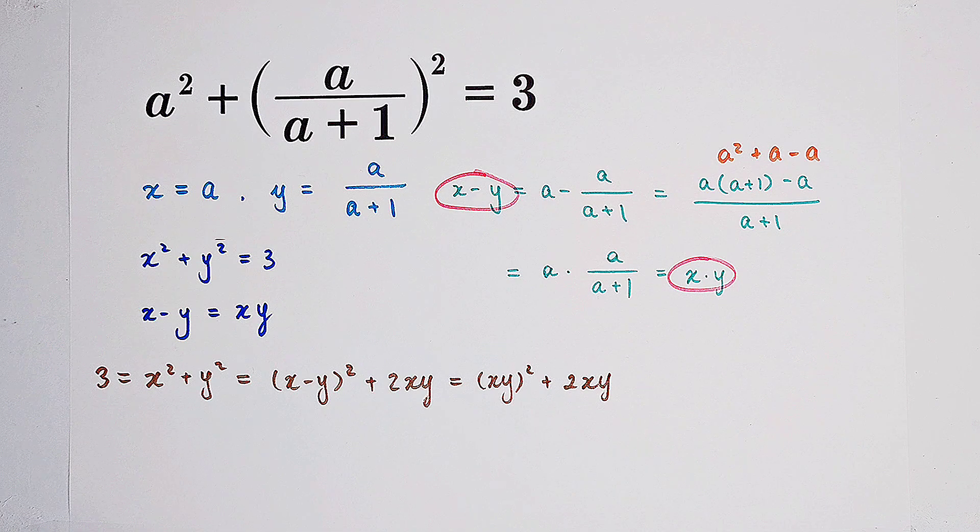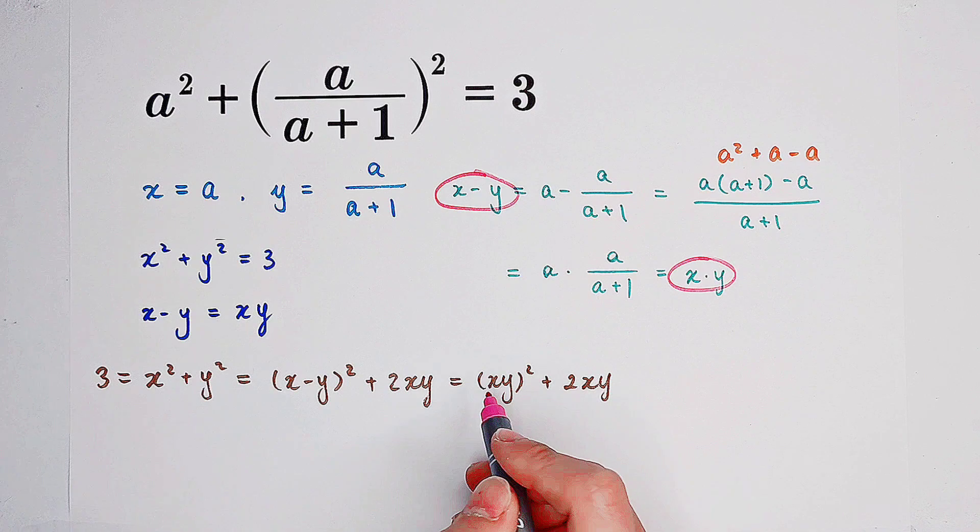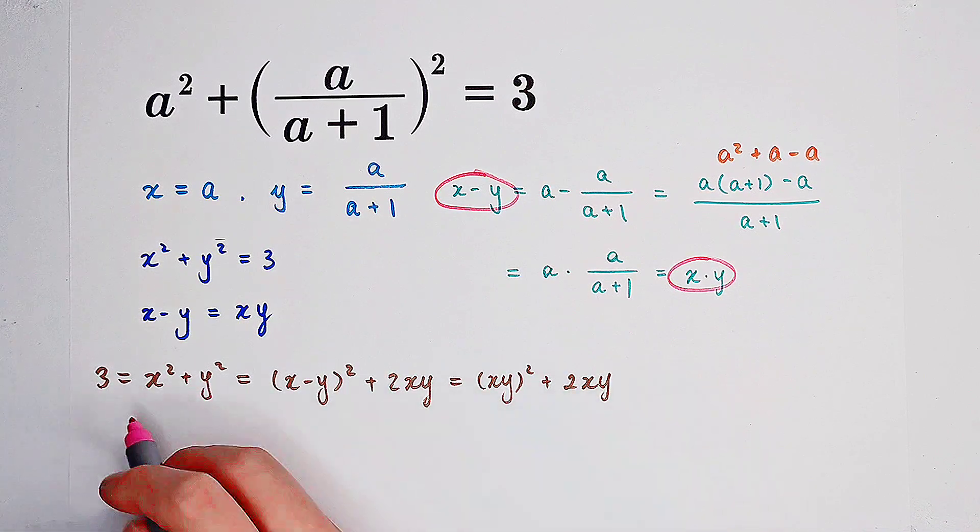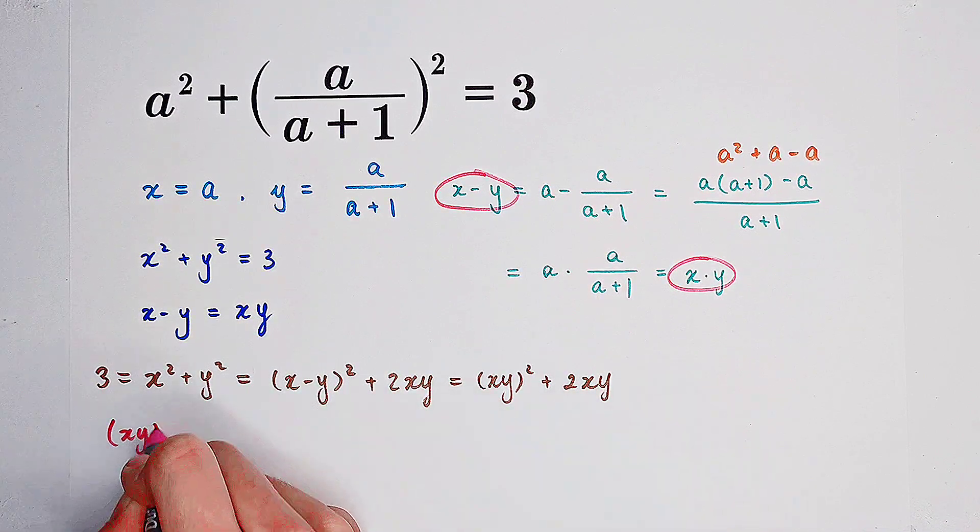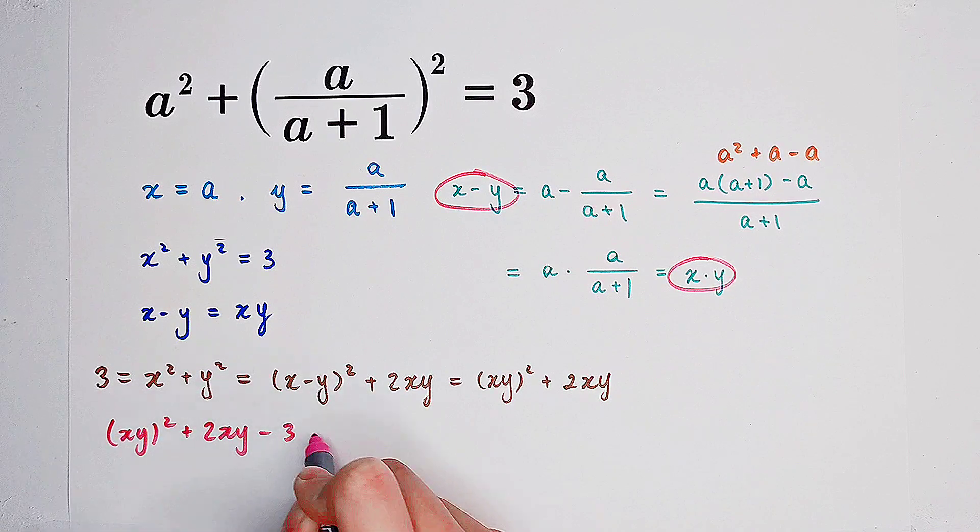Now we actually get a quadratic equation about x times y. Because here we get xy squared plus 2 times xy equals 3. So x times y all squared plus 2 times xy minus 3 equals 0.